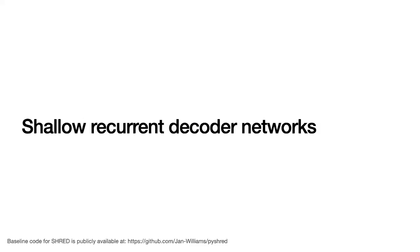That brings us to shallow recurrent decoder networks. This sounds a bit scary and enigmatic, but what we can accomplish with these — or SHRED as a fun acronym — is learning a mapping from a limited set of measurements to the full state space by utilizing the trajectory, that time history, of the sensor measurements. It's worth noting that SHRED was originally developed by folks here at UW specifically for immobile sensors, but in my work today I'll talk about how we can extend this framework to research projects that require mobile sensing.